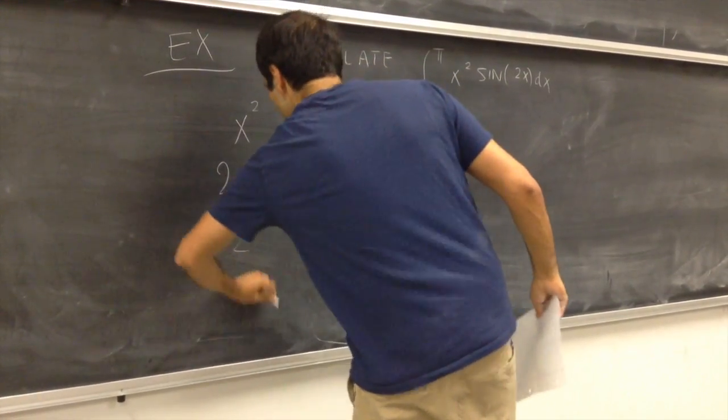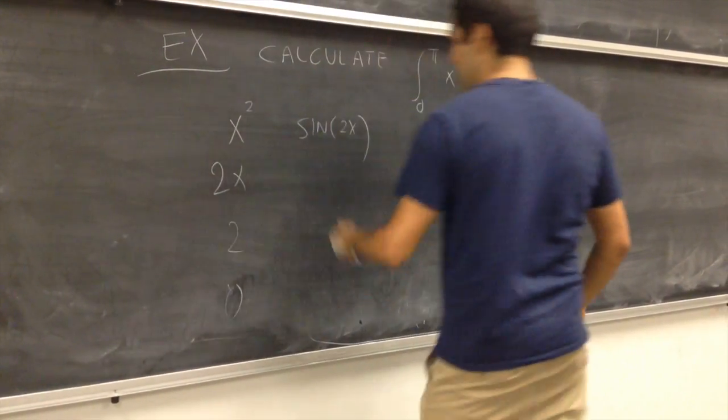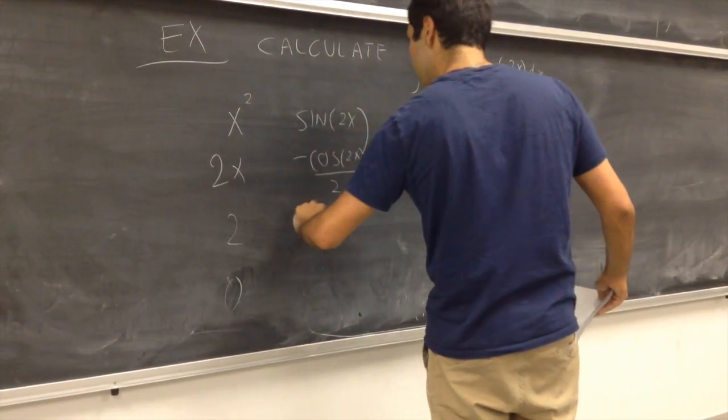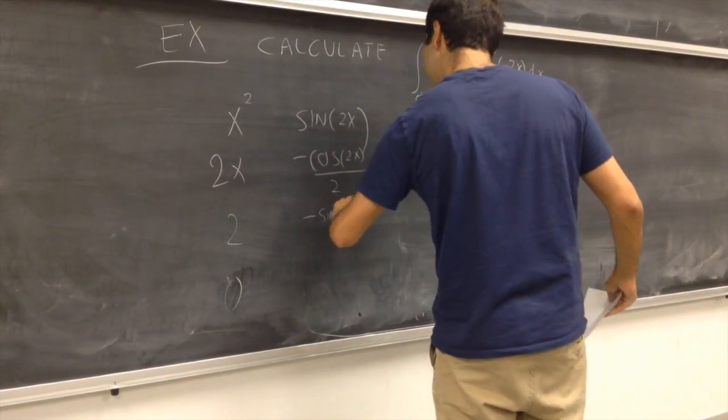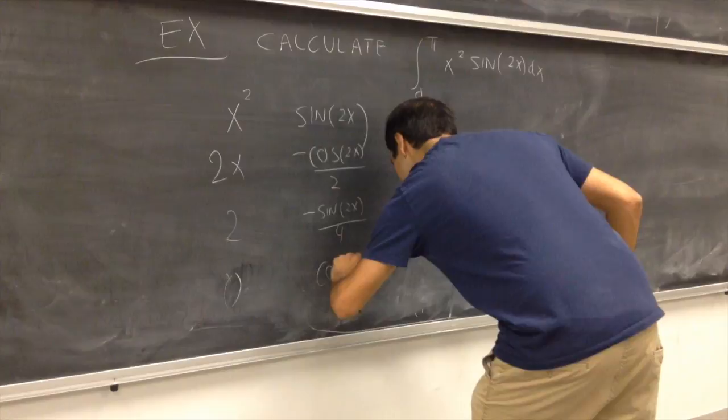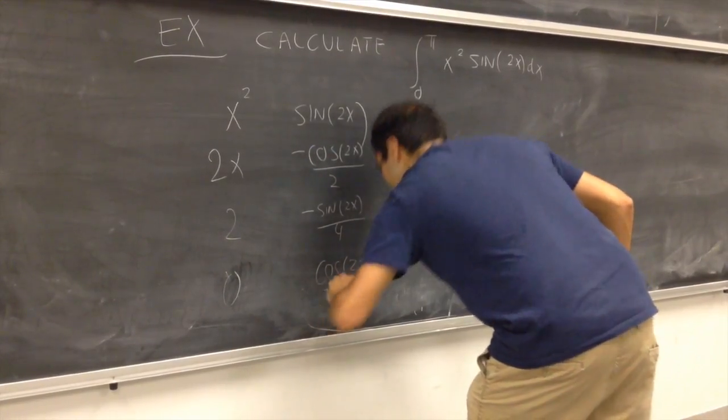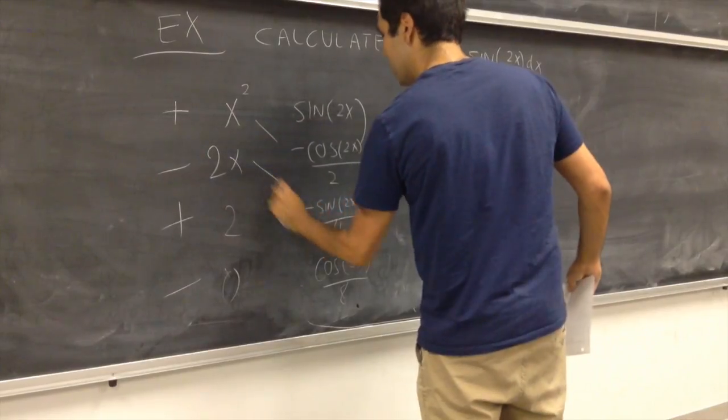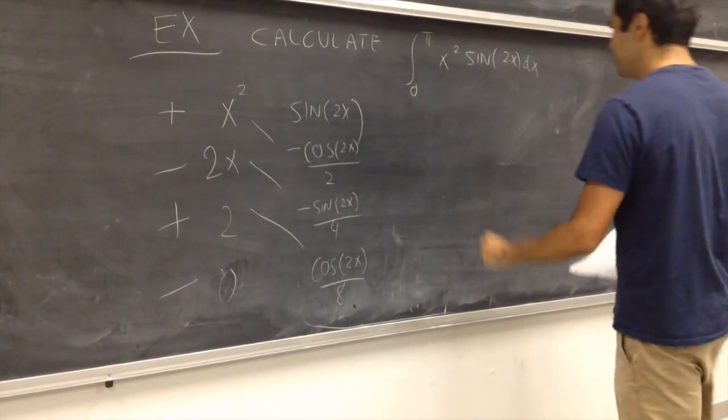So, 2x, 2 and 0. Anti-differentiate. So, minus cosine of 2x over 2, minus sine of 2x over 4, and cosine of 2x over 8, plus, minus, plus, minus, diagonal things.